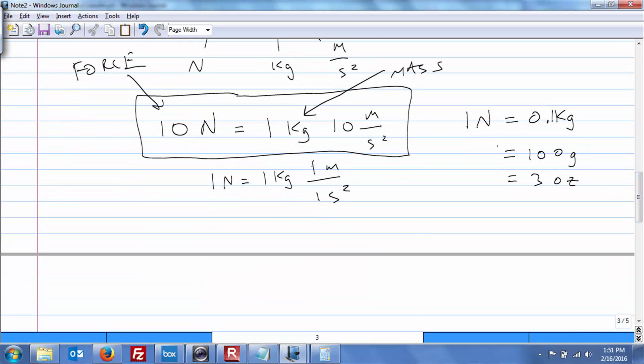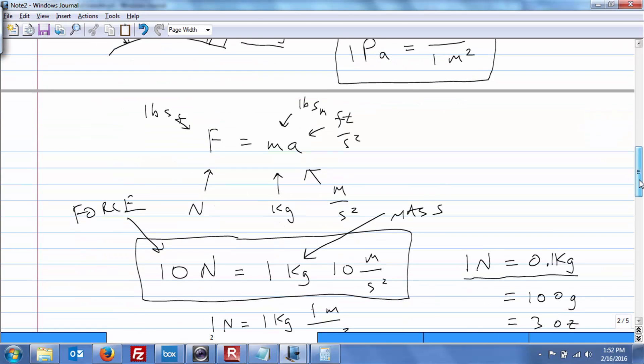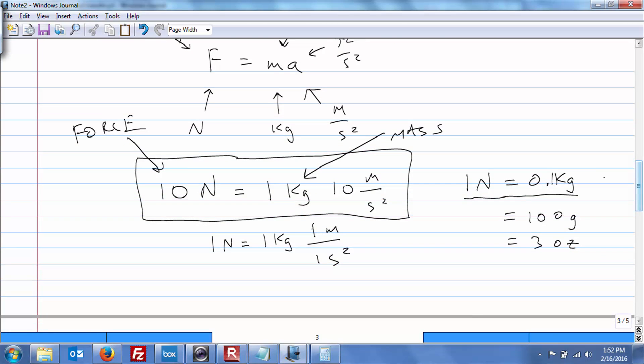I defined what a newton was in terms of mass because a lot of times we become confused what mass and force are because we use pounds for both in our system rather than having two different names for mass and force. And so what I decided or what we determined is that one newton is the weight of about a tenth of a kilogram of mass or about 100 grams or about three ounces.